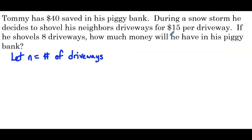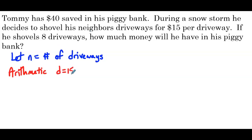He's charging $15 per driveway, so he'd be adding $15 every driveway that he shovels. Adding 15 to go from one term to the next — that would be an arithmetic sequence. So we have an arithmetic sequence with a common difference of 15. They told us that he has $40 saved in his piggy bank, but what term of the sequence would that be? Remember, n is the number of driveways.